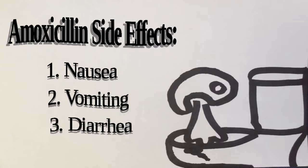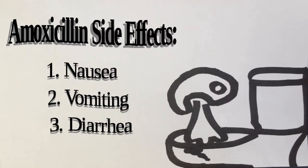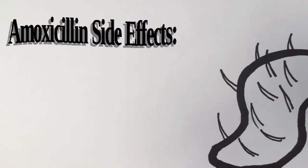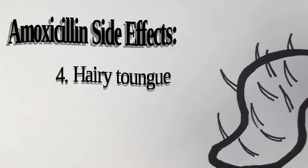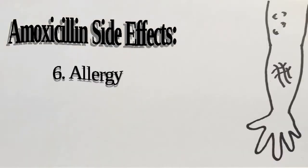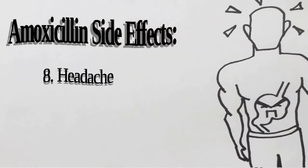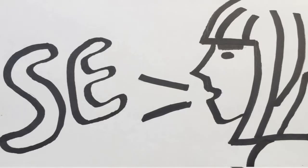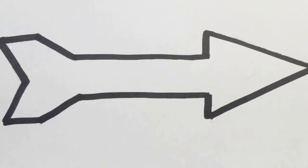Nausea, vomiting, and diarrhea are not surprisingly common side effects of almost all drugs, especially those taken by mouth, so expect these three from any other drug as well. A more distinct side effect is hairy tongue, along with an odd sense of taste. Vaginal yeast infection is also a common side effect among antibiotics due to the killing of beneficial bacteria. Allergy and skin rash are common among penicillin-type antibiotics. The remaining side effects are headache and stomach upset.